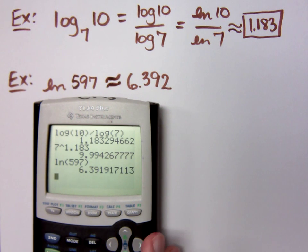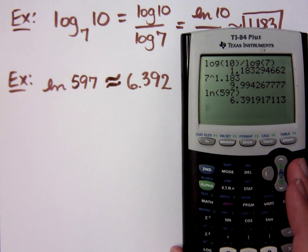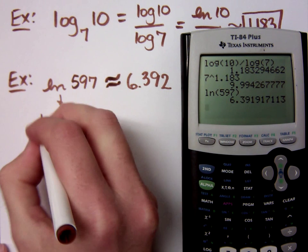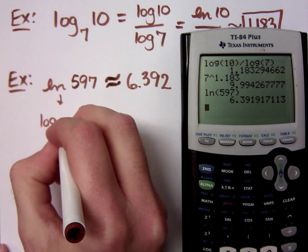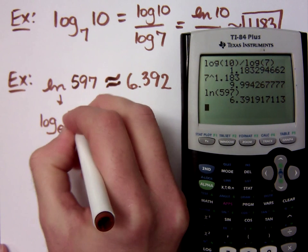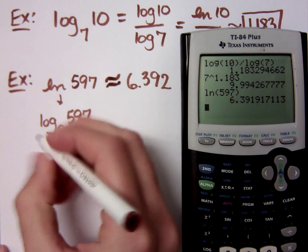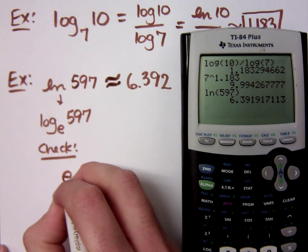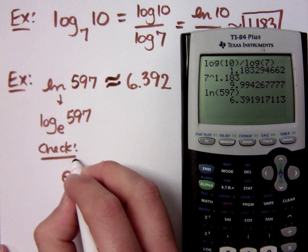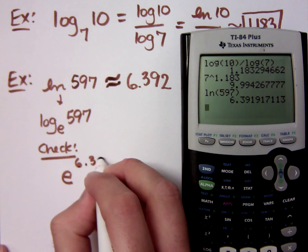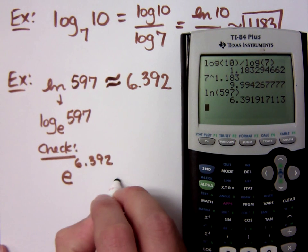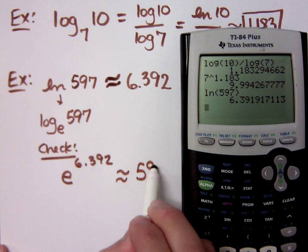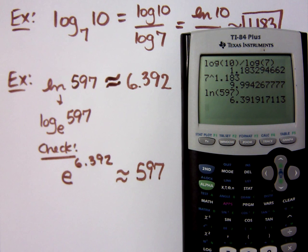So you're saying 6.392 is the base? No. I'm saying that this guy right here is understood to mean log with base E. So for me to check my work in this problem, I'm saying that if I take E and I raise it to the 6.392 power, this guy should be approximately equal to what was inside my log, 597.